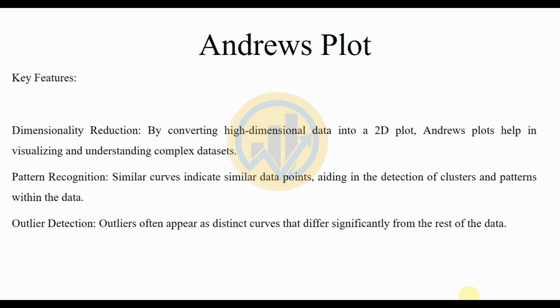The key features: dimensionality reduction - by converting the high-dimensional data into a 2D plot, Andrews plots help in visualizing and understanding complex datasets. Pattern recognition: similar curves indicate similar data points, aiding in the detection of clusters and patterns within the data. Outlier detection: outliers appear as distinct curves that differ significantly from the rest of the data.